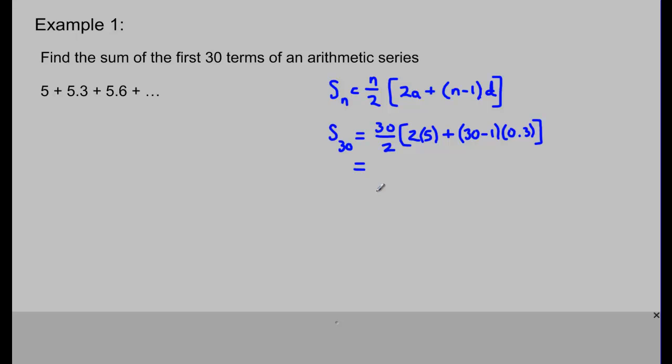Now, we just throw all of this into our calculator. So, 30 divided by 2 is 15, and we're going to multiply that times, 2 times 5 is 10, and 29 times 0.3 is 8.7. So, what's 15 times 18.7? Well, that's 280.5. So, the sum of the first 30 terms in this series is 280.5.